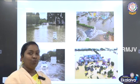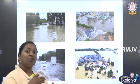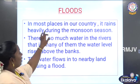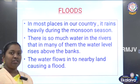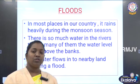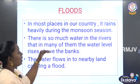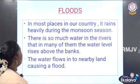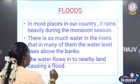When the water level is normal we cannot say it is a flood. When it crosses above the level we can call it a flood. In most places in our country it rains heavily during the monsoon seasons, and every year we face seasonal rainfall. There is so much water in the rivers that in many of them the water level rises above the bank, and the water flows into nearby land. Then we can call it a flood.